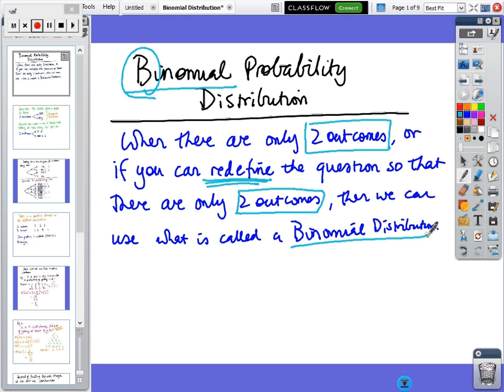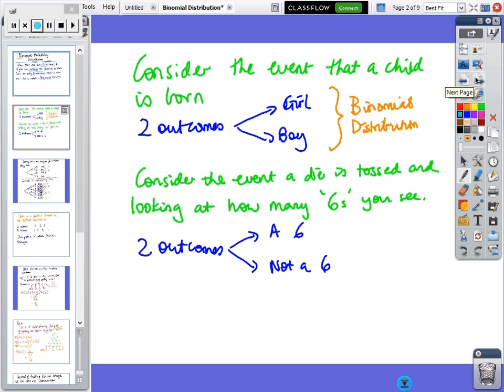Consider the event that a child is born. There's only two outcomes: a boy or a girl. So if there's two outcomes, it's a binomial distribution. If you consider the event that a die is tossed and you're looking at the number of sixes, obviously there are six different things that could happen, but you could redefine the question as you get a six or you get not a six. So now we've got two outcomes, and you have a binomial distribution.